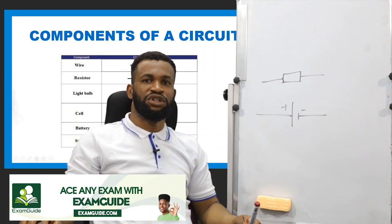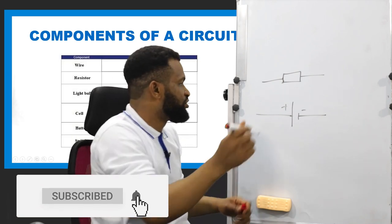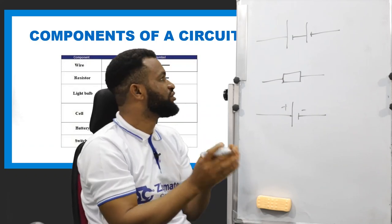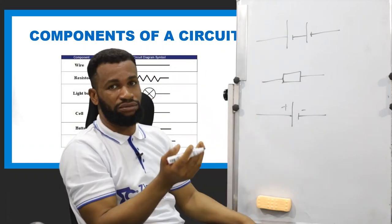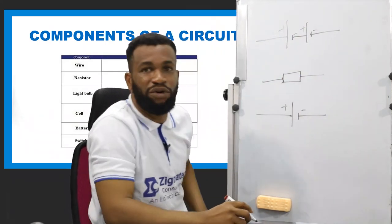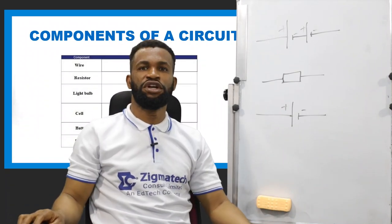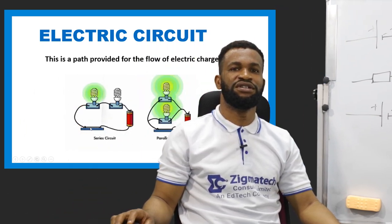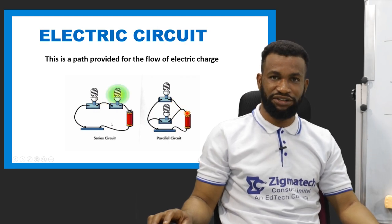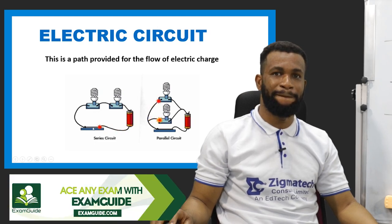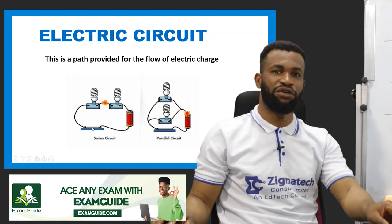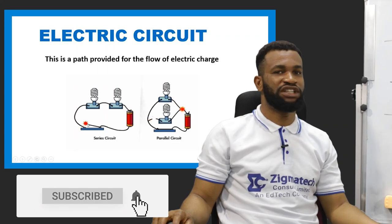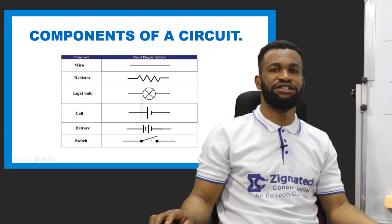The next component is a battery. When we talk about battery, we mean a combination of two or more cells. In the symbol: positive, positive, negative, negative — that is the battery symbol. We also have a switch, which we use to represent off and on. When the circuit is open — as shown by the switch symbol — the charge cannot pass through. That is exactly how this symbol represents a switch.